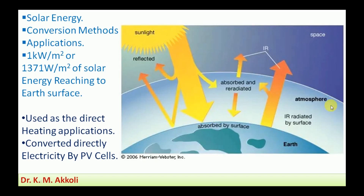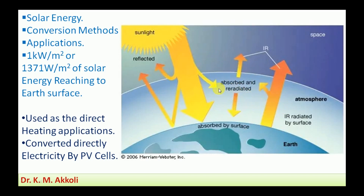Here the Earth's atmosphere extends to a certain distance; beyond that it is vacuum. Some radiations reach the Earth's surface, while some are reflected by obstacles like air and clouds present in the atmosphere, and some are absorbed by them. The remaining radiation reaches the Earth's surface, and some of that is reflected back from the surface.